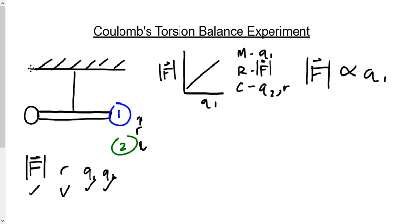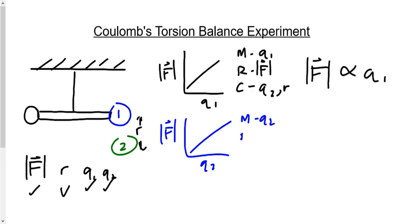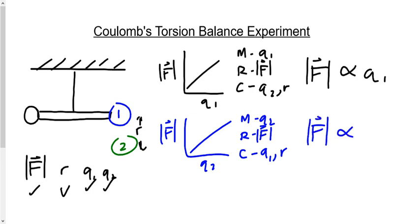The second experiment is F versus Q2. The manipulated variable is Q2, the responding variable is force, and the control variables are Q1 and R. If we find the relationship between F and Q2, it should be the same relationship we had between F and Q1 — they're directly proportional.